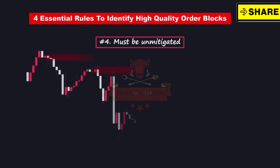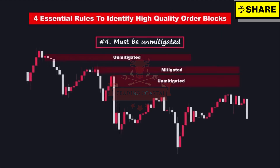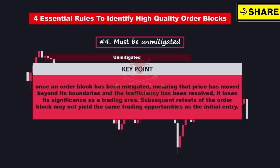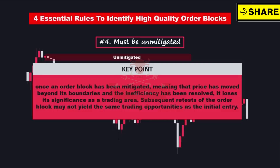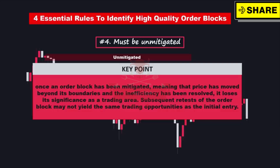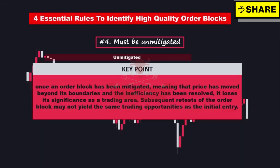Rule number four: the order block must be unmitigated. Order blocks are considered one-time use, meaning we focus on the trading opportunity when price first enters an order block. Once an order block has been mitigated — meaning price has moved beyond its boundaries and the inefficiency has been resolved — it loses its significance as a trading area. Subsequent retests of the order block may not yield the same trading opportunities as the initial entry.